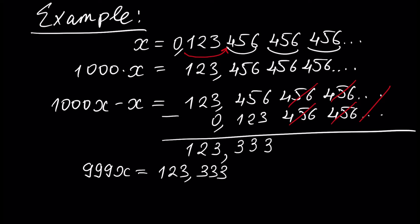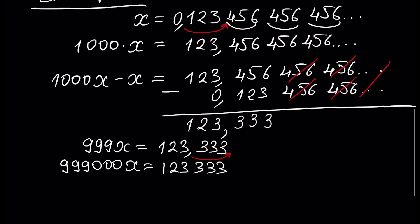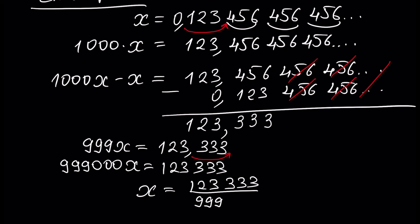Next, we also multiply this number by 1000, because we want to move our floating point and get an integer number. After multiplication by 1000, we have 999,000x equal to 123,333. We easily calculate x, and x will be 123,333 over 999,000. This is the rational representation of the number whose decimal representation was 0.123456456456...